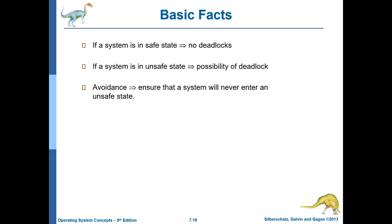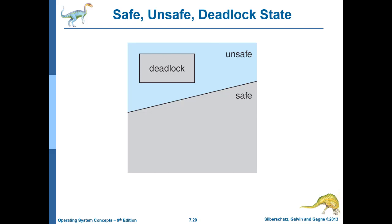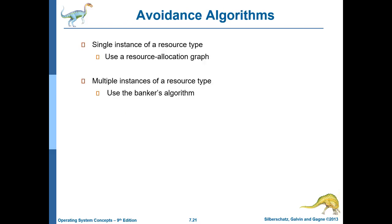If the system is in a safe state, it is guaranteed to be deadlock-free. If the system is in an unsafe state, there is a possibility of deadlock — though it does not necessarily mean a deadlock will occur. However, when the system is in a safe state, there will definitely be no deadlock. To avoid deadlock, we use the avoidance algorithm to ensure the system never enters an unsafe state and always remains in a safe state.